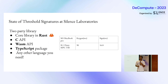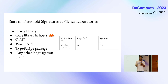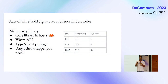State of threshold signatures at Silence Labs: we have our two-party library written in Rust. We expose a C API, Wasm API, a TypeScript package, or any other language you need. For our multi-party library, we also have a Rust library with all sorts of APIs and wrappers. These are our initial preliminary benchmarks for keygen and sign, and we're already working on optimizations.